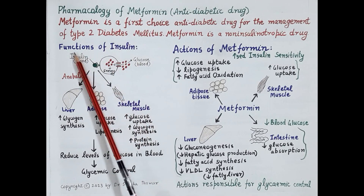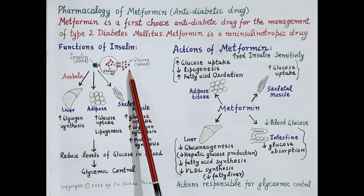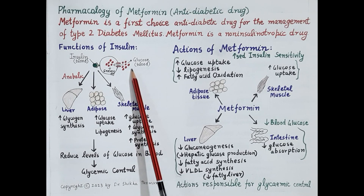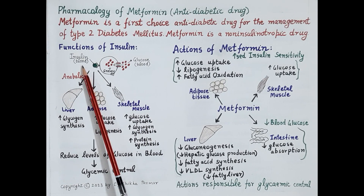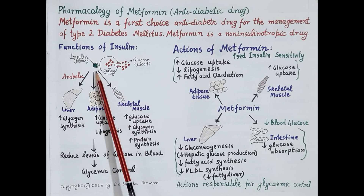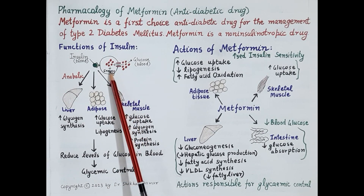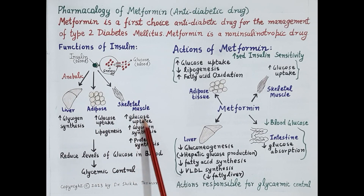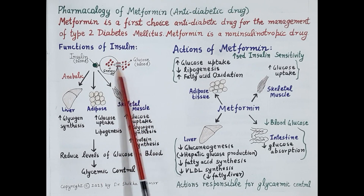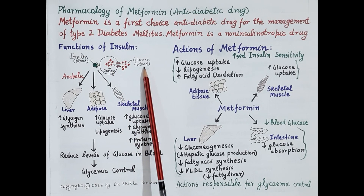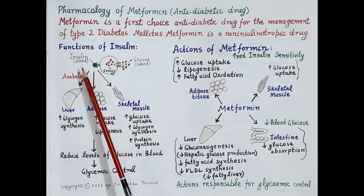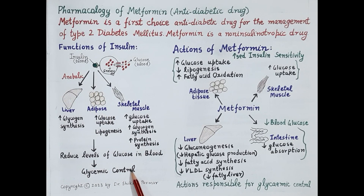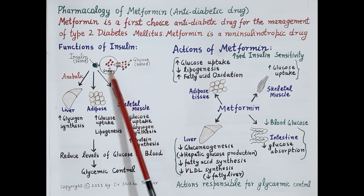In order to understand pharmacology of metformin, let's quickly review functions of insulin. Look at this schematic diagram. After meals, levels of glucose rise in the blood. These increased levels of glucose stimulate increased release of insulin by the pancreas. Insulin binds to its receptors and, as you can see in this diagram, insulin is essential for the transportation of glucose inside the cell — for the uptake of glucose by cells, especially adipose tissue and skeletal muscles. As glucose moves inside the cell, blood glucose levels reduce and come back to normal. Thus insulin is essential for regulating glycemic control.